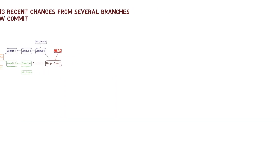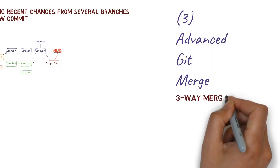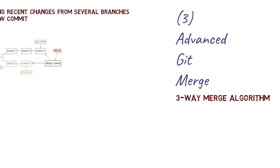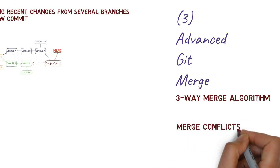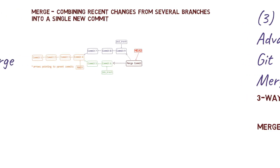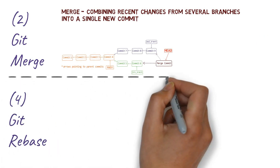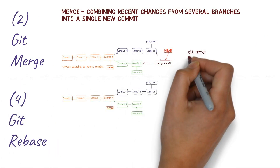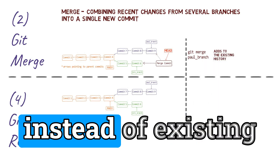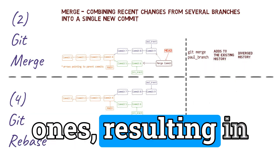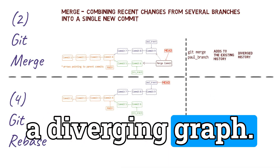In the third video, we closely considered the three-way merge algorithm, how git applies it to automatically resolve conflicts, and how we can resolve conflicts manually. In the fourth part of this series, we covered git rebase. We saw that whereas with git merge we added a new merge commit to the history, with git rebase we rewrite history. We create new commit objects instead of existing ones, resulting in a linear history graph rather than a diverging graph.